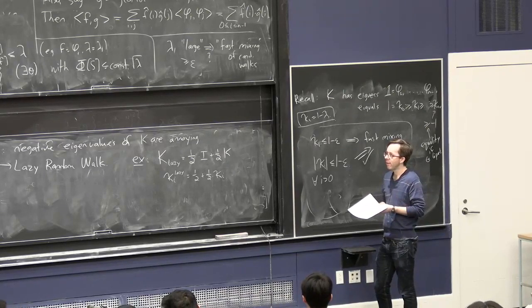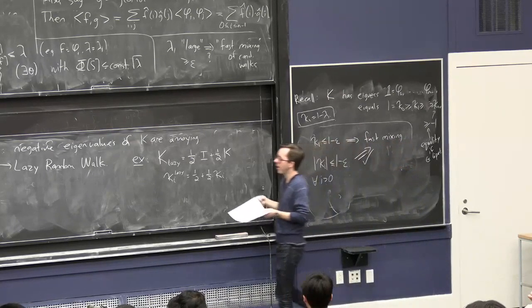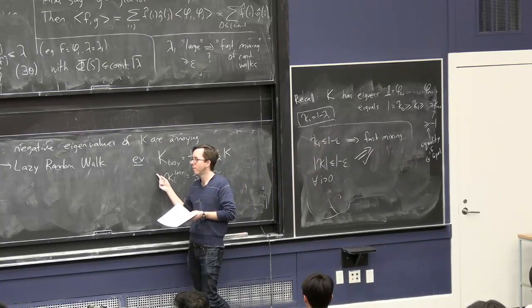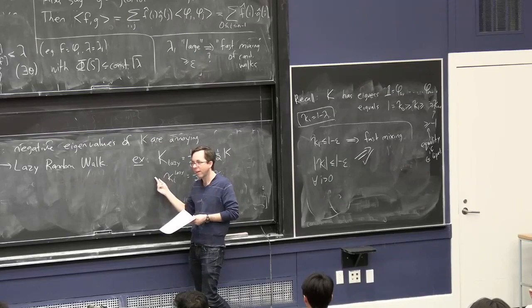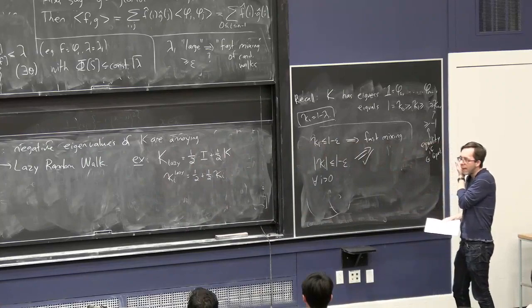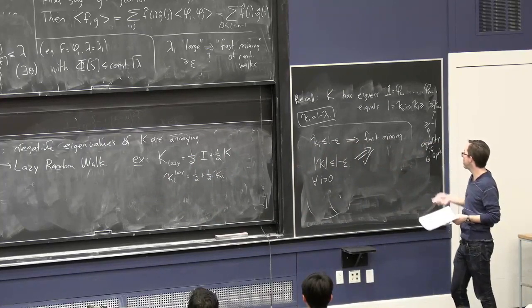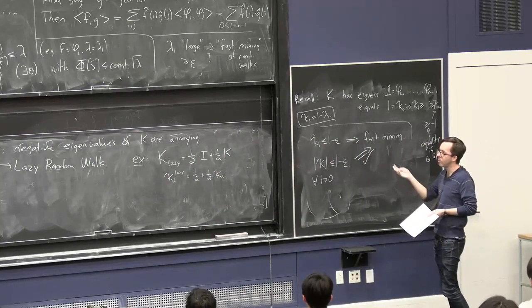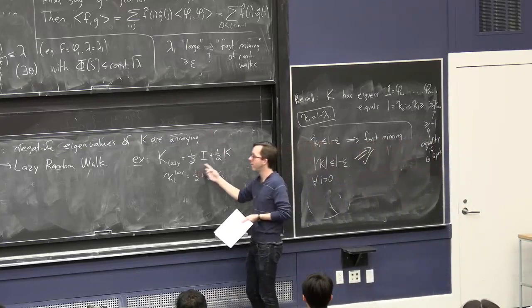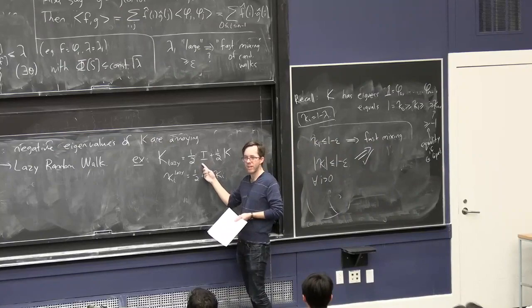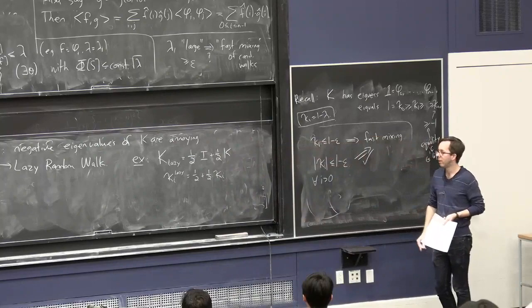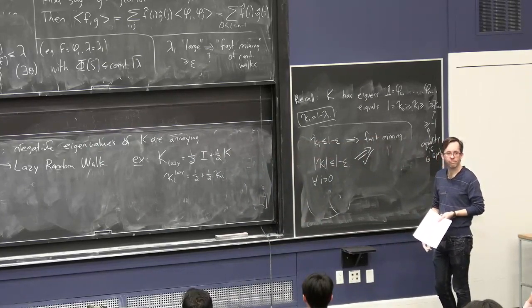Sometimes you don't even need to literally do it — in many cases you can just analyze the standard random walk and say they're the same up to a factor of two. If you have a bipartite graph you'd better do this. Also, there's no particular reason to make the probability of standing still exactly 1/2 — even 1% would still break the even-odd problem with the bipartite graph.